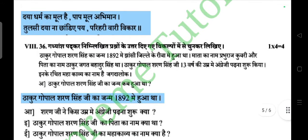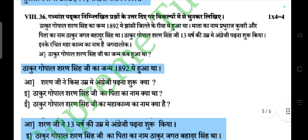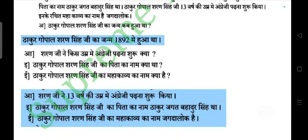Gadyamsha — read the passage carefully and answer the following questions. First question: Thakur Gopal Sharan Singh ji ka janma kab hua tha? Answer: Thakur Gopal Sharan Singh ji ka janma 1892 mein hua tha. Question: Sharan ji ne kis umra mein Angrezi padhna shuru ki thi? Question: Thakur Gopal Sharan Singh ji ke pita ka naam kya tha? Answer: Pita ka naam Thakur Jagad Bahadur Singh tha. Question: Maha kavya ka naam kya tha? Answer: Maha kavya ka naam 'Jagad Lok' tha.